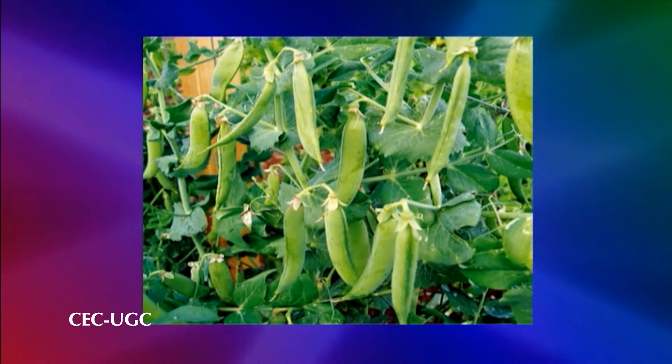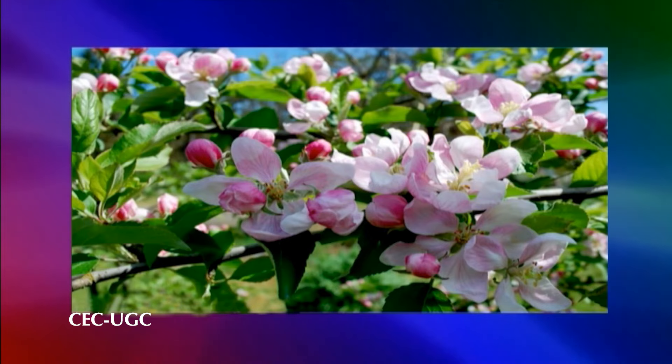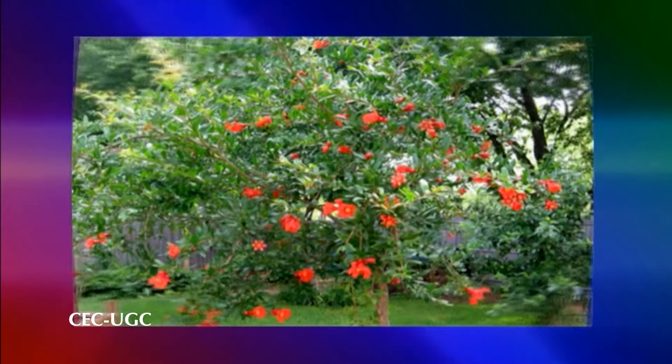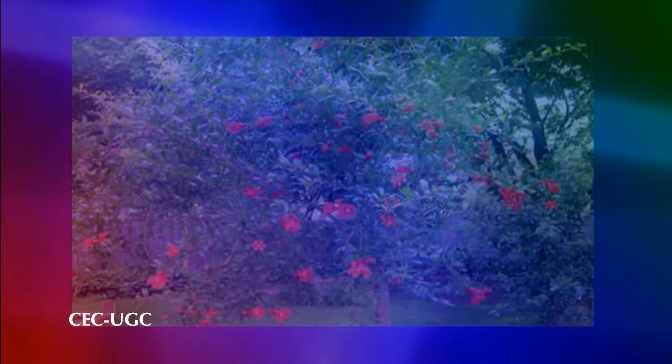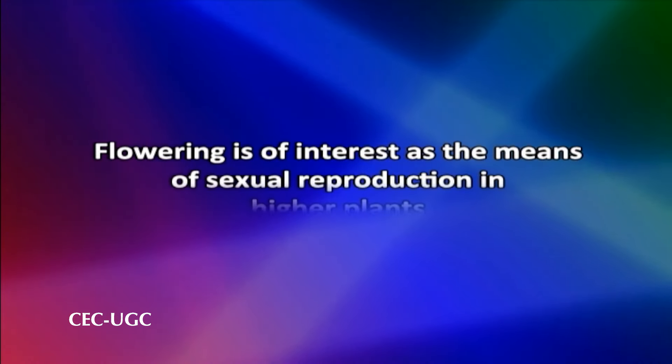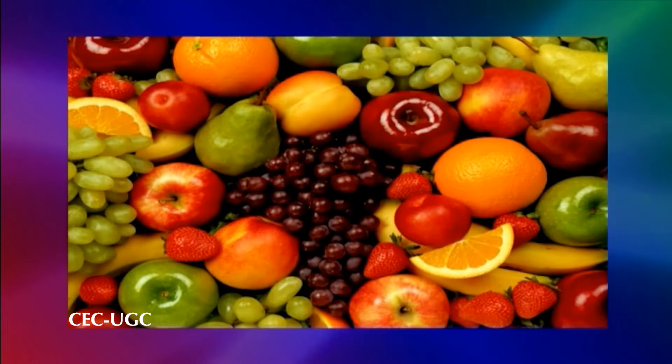This is particularly true in case of annuals where floral initiation signals the end of leaf production and the beginning of chains that culminate in seed production and death of the plant. However, in perennials, floral initiation is not accompanied by such drastic change as vegetative and reproductive growth goes simultaneously. To a botanist, flowering is of interest as the means of sexual reproduction in higher plants. And to the rest of mankind, flowering is of greatest practical importance since agriculture is based on the control of flowering and its resultant fruits and seeds.